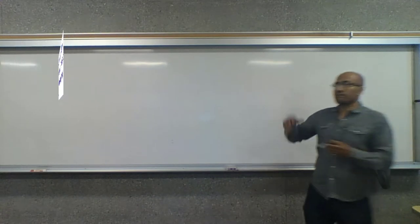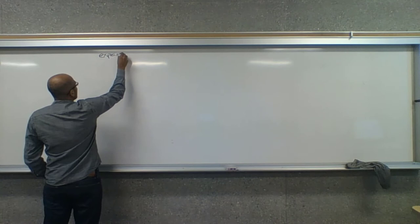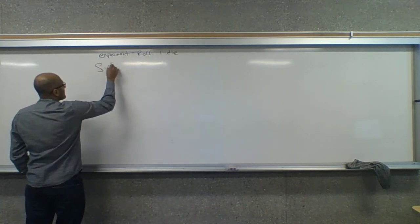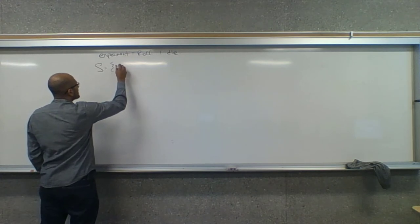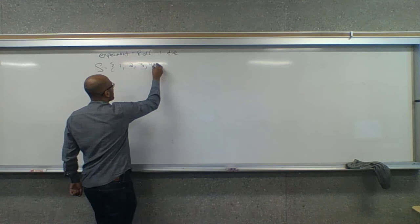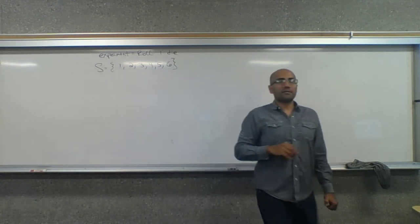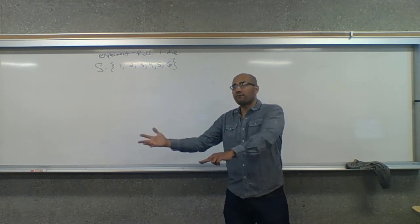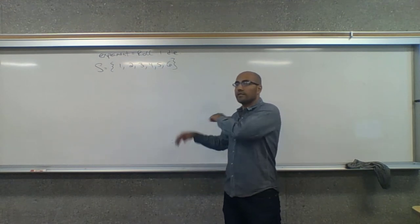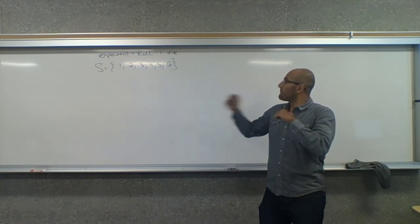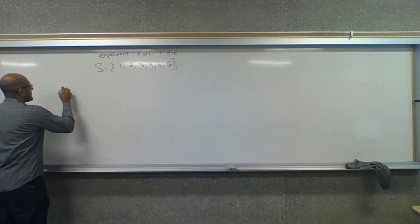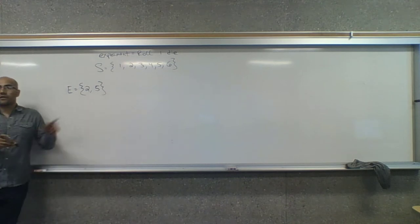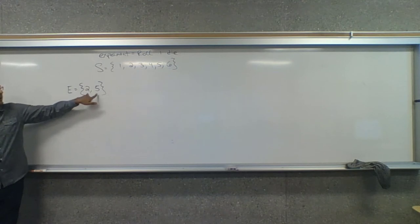Remember the breakdown of this vocabulary. We have some sort of experiment — maybe that experiment is rolling one die. Then we have our sample space, which is made up of simple events, which are the possible outcomes: a one, a two, a three, a four, a five, or a six. Let's say this is the easiest game in Las Vegas. You put money down on one of the numbers. Let's say I put money on the number two and the number five — those are my favorite numbers. So that's event E: two and five, made up of two simple events.